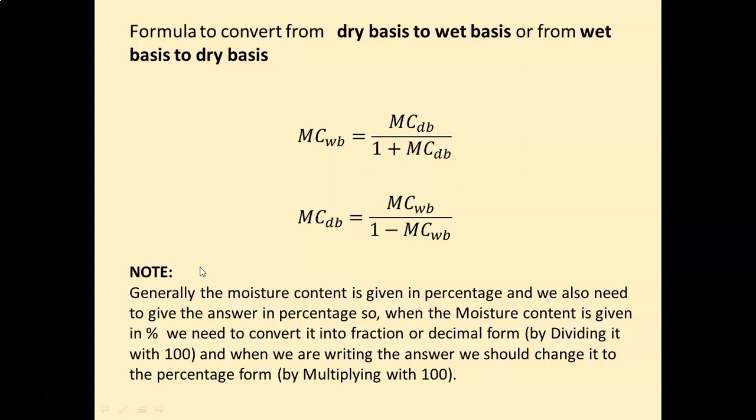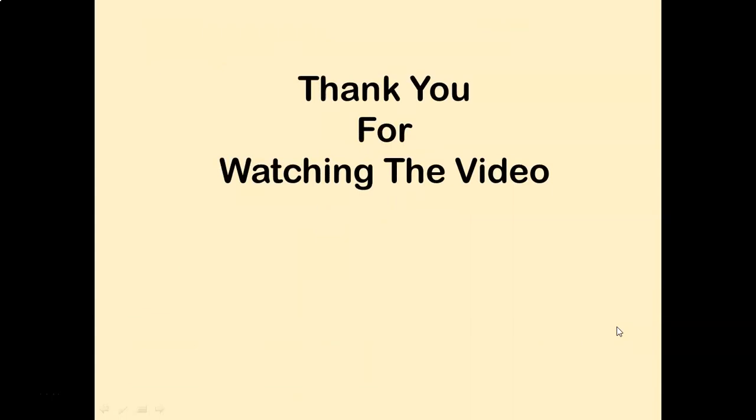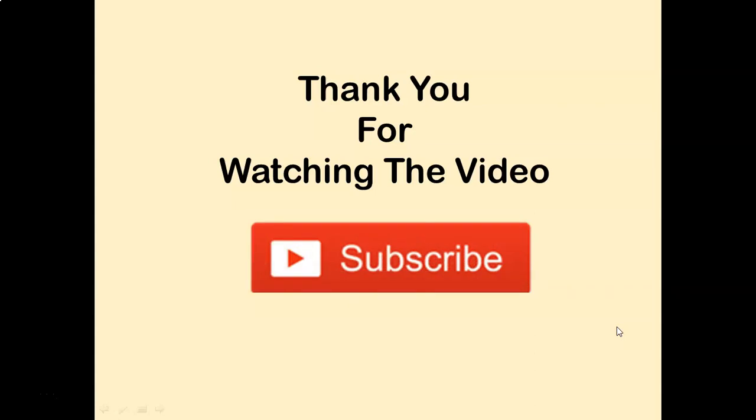Note: moisture content is generally given in percentage, and answers should also be in percentage form. When moisture content is given as a percentage, convert it to a fraction by dividing by 100. When writing the answer, multiply the result by 100 to convert back to percentage form. Thank you for watching — if you liked this video, please hit the like button, share, comment, and don't forget to subscribe.